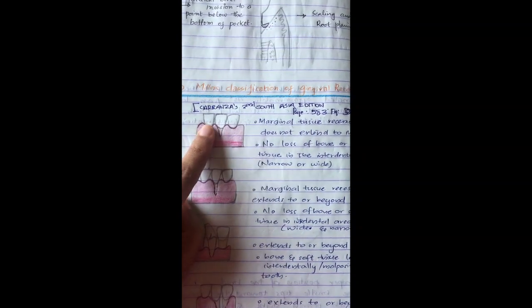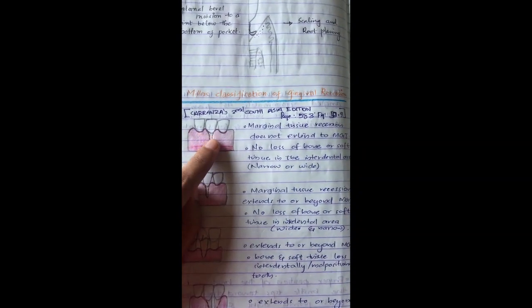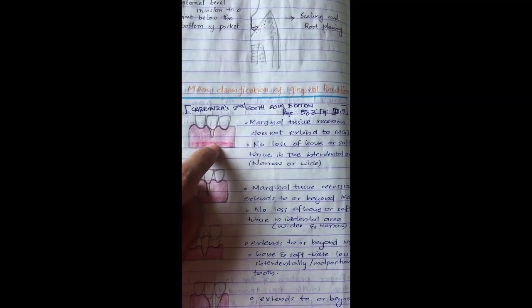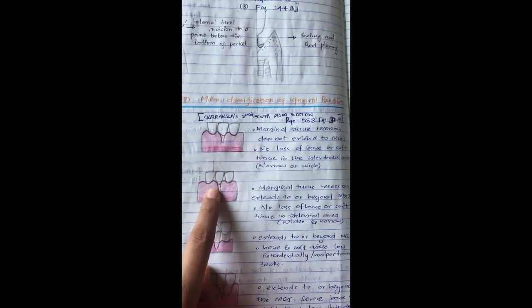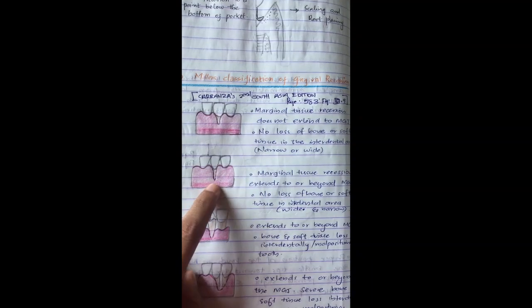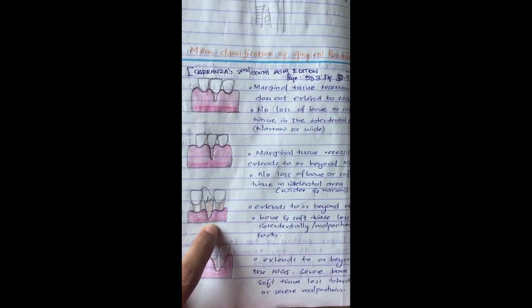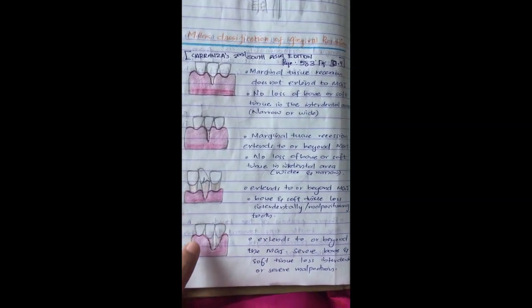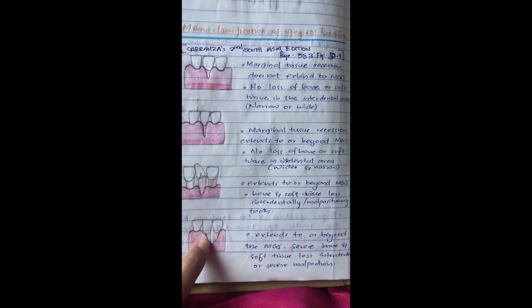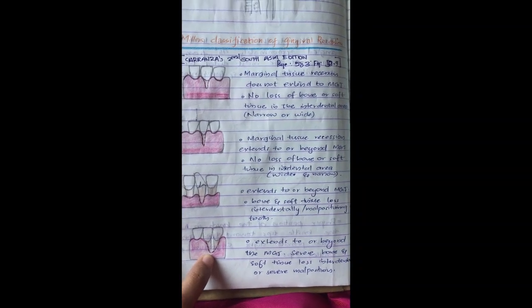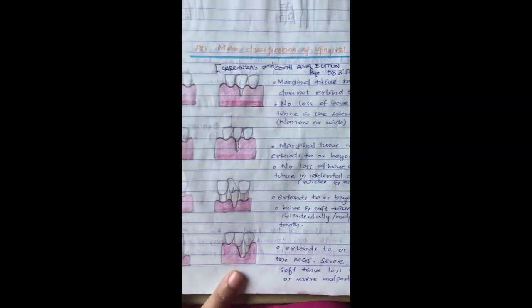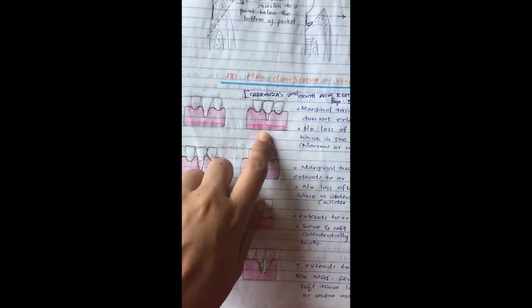Next is P.D. Miller's classification of gingival recession. Grade 1 is marginal tissue recession that does not extend to the mucogingival junction. Grade 2 is when it extends up to the mucogingival junction. Grade 3 is beyond the mucogingival junction and the tooth may be malpositioned. Grade 4 extends to or beyond the mucogingival junction and there is severe bone and soft tissue loss. There is a narrower and a wider version illustrated.